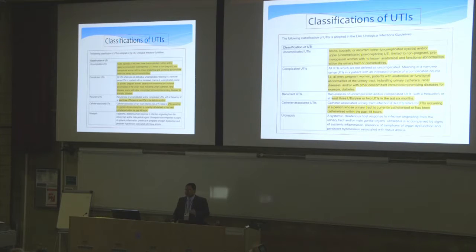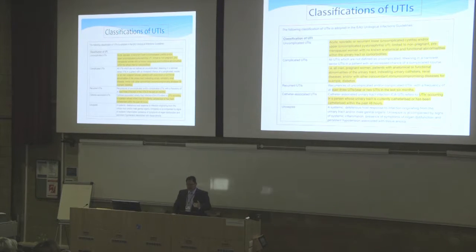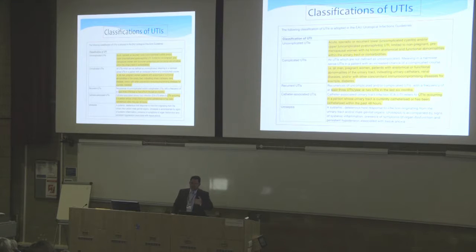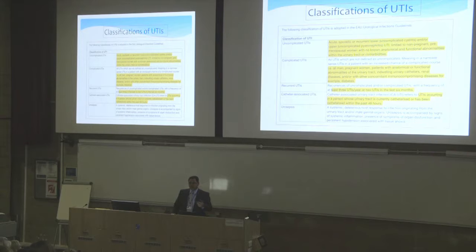Uncomplicated infections are acute infections of the lower tract — occasionally upper tract — limited to non-pregnant, pre-menopausal women with no anatomical or functional abnormalities. By that definition, all male infections are complicated. Complicated urinary infections cover all men, pregnant females, patients with structural or functional abnormality of the urinary system, indwelling catheter, renal disease, or immunocompromised patients such as diabetics. These patients need a longer antibiotic course, more investigation, and have a higher chance of becoming unwell.